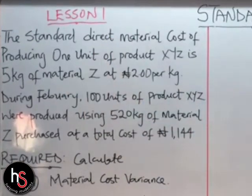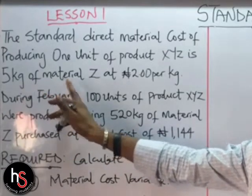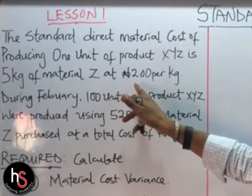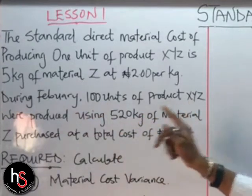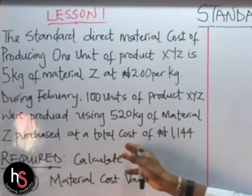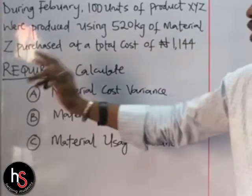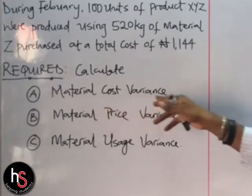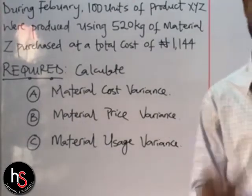So we have a question on the board. The question says: the standard direct material cost of producing one unit of product XYZ is 5 kilograms of material Z at 2 Naira per kilogram. During February, 100 units of product XYZ were produced using 520 kilograms of material Z, purchased at a total cost of 1,144 Naira. Required: calculate the material cost variance, material price variance, and material usage variance.